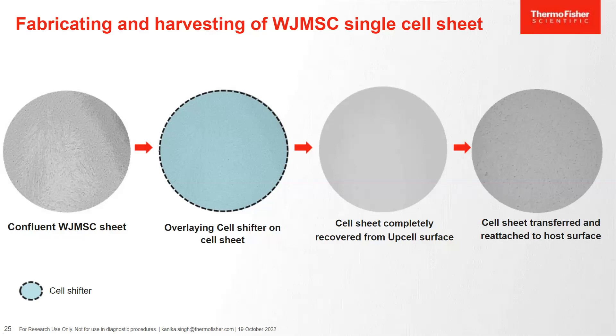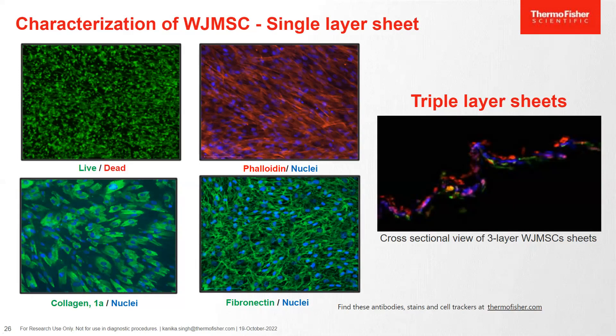Once these cells were transferred, they were characterized using different antibodies and live/dead stains in order to confirm their viability. To ensure whether the transferred sheet is live or not, we stained them using live and dead stain. The green cells are all live cells and there were few red cells which were dead. This result showed that the cells in the transferred sheet are all live. In order to see the expression of ECM proteins, we stained them using Collagen 1A antibody and fibronectin antibodies. The expression of Collagen 1A and fibronectin is present in the transferred sheet.